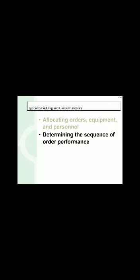The typical scheduling and control functions include: first, allocating orders, equipment, and personnel. When we receive orders we must decide which order should be loaded first, what equipment should be allocated, and which personnel will complete the job. Second is determining the sequence of order performance, where sequencing is done according to the time taken by the activity and the due date by which the product must be supplied to the customer.